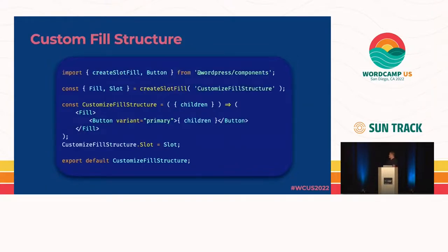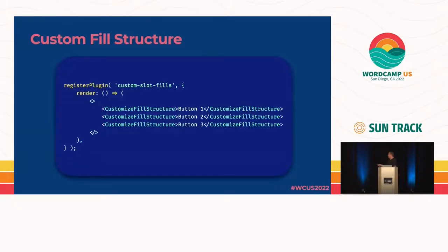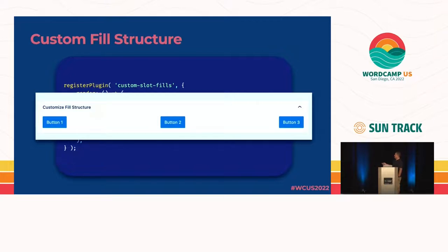You can customize the fill structure. With this particular one, the fills are all going to be wrapped in a button. This is my settings screen — it's very much the same, just the name of the slot changes. When we register our plugin, we can use multiple instances of the slot fill to create multiple buttons. I have three instances, and when this renders, it renders three buttons. This can be very powerful if you want to control what goes in a slot fill.